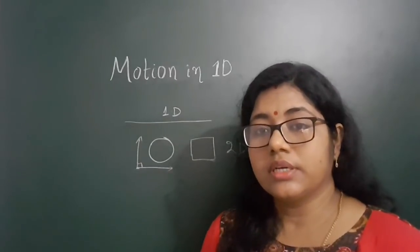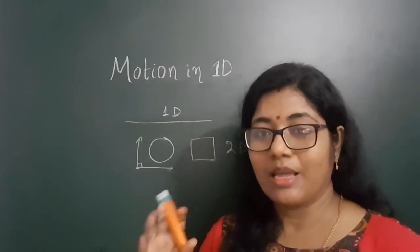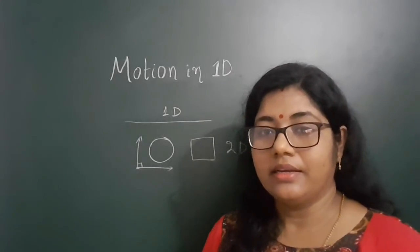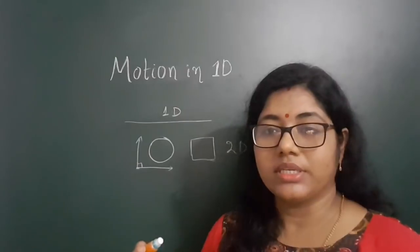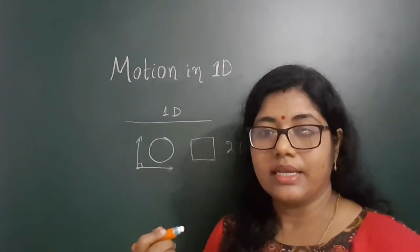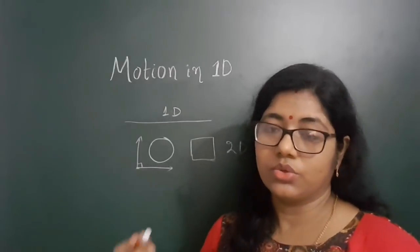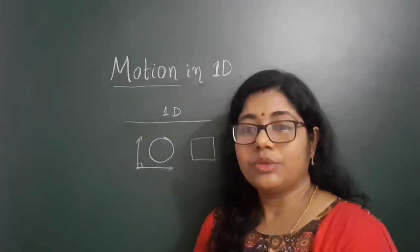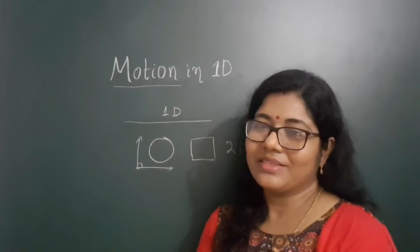So if you consider spheres like balls, cubes, etc., then they will possess length, breadth, and as well as the height. So they are three dimensional shapes. Our observable world is three dimensional.